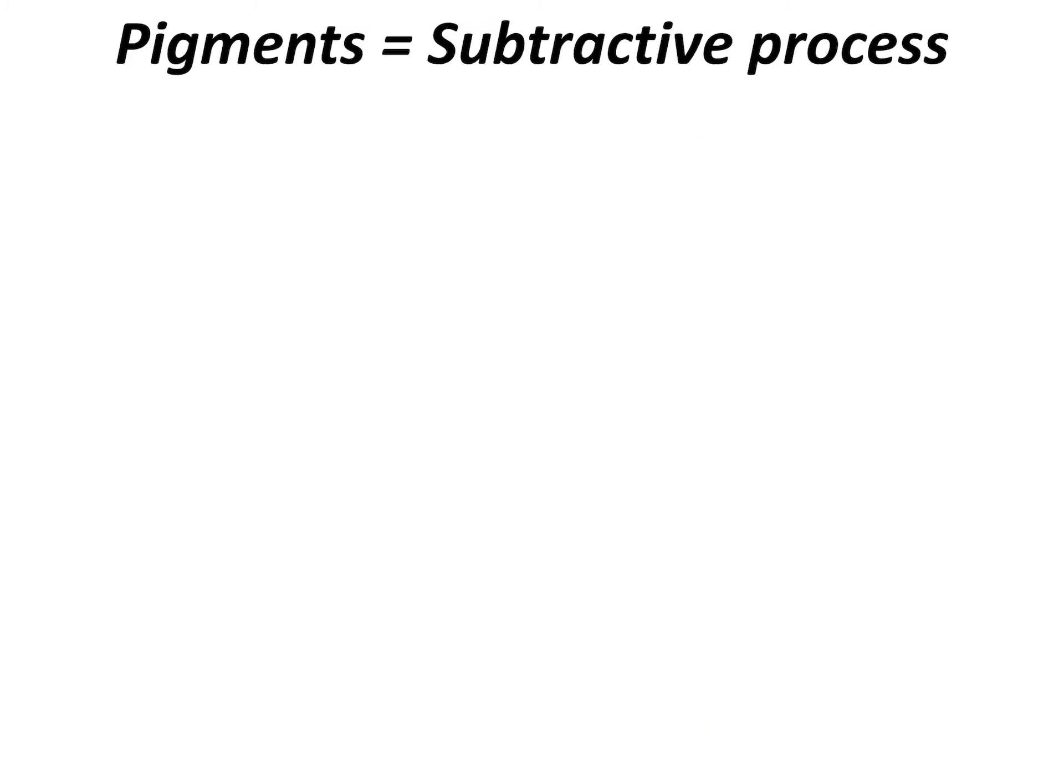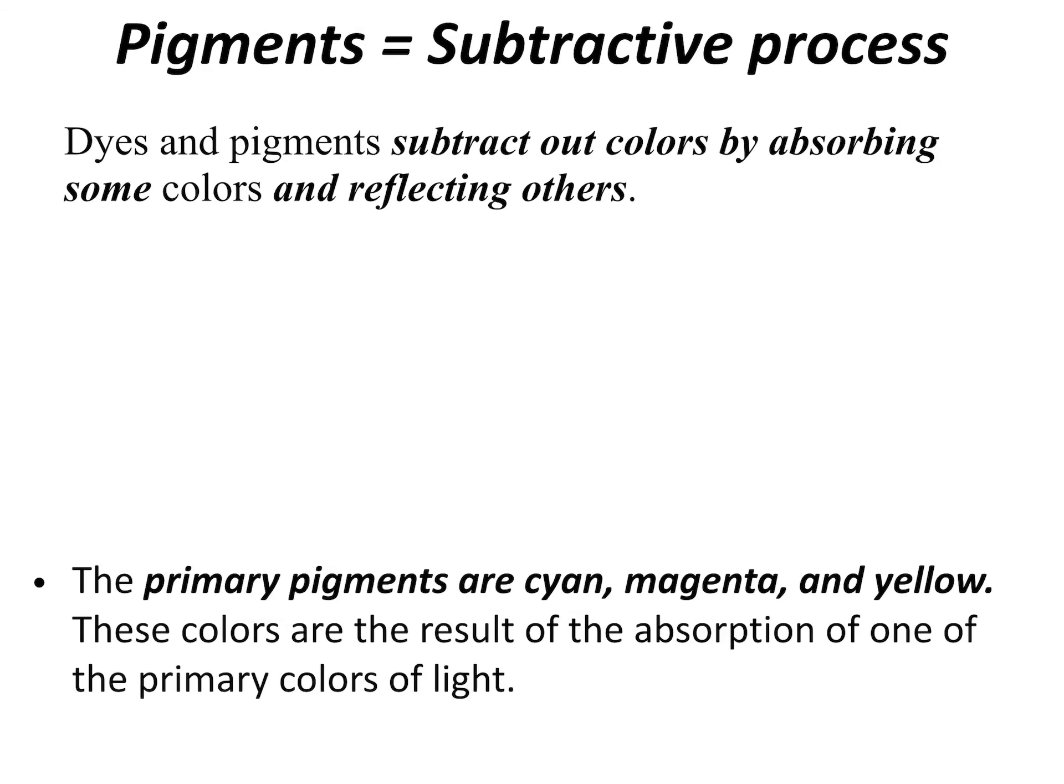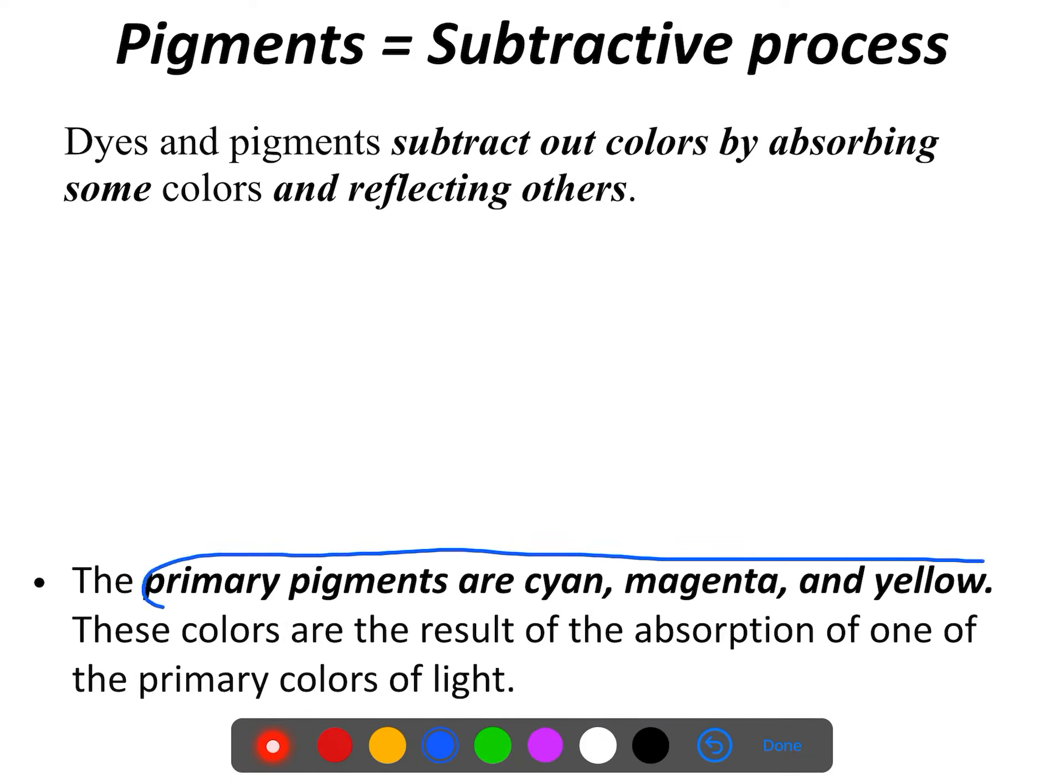So when we're talking about pigments, basically the subtractive process is just the opposite. We are now trying to use the colors cyan, magenta, and yellow. So for pigments, these are our primary colors. Make sure you know that. Cyan, magenta, and yellow are the primary colors for pigment.